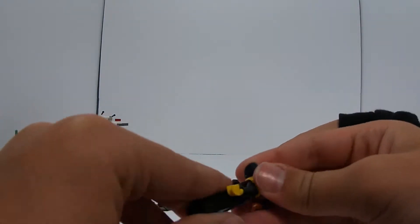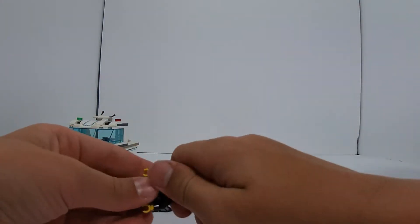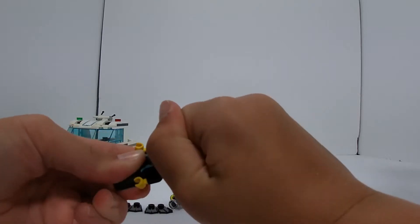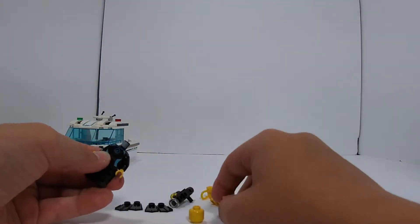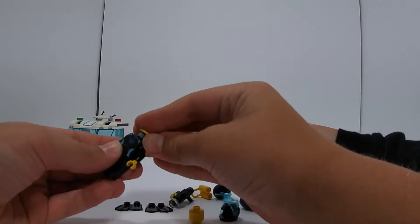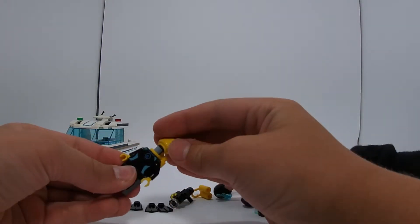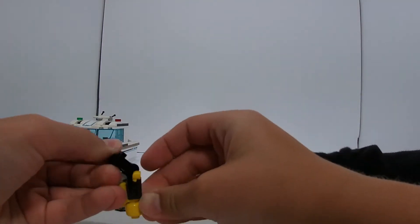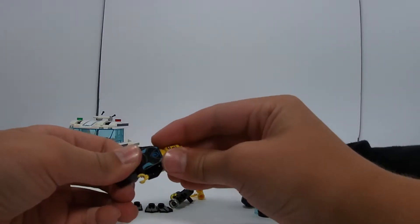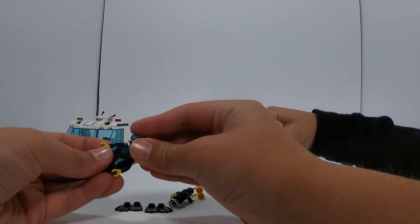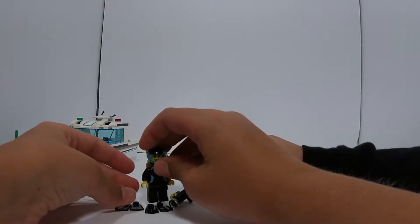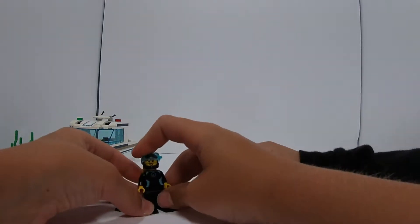And she can wear that hat. Or she could pop her head off and then throw her diving tank on. And her head on, and then her helmet on. And then some flippers. Put some black flippers on.